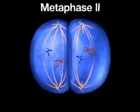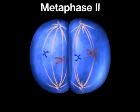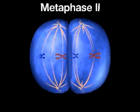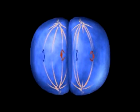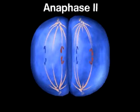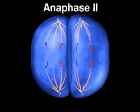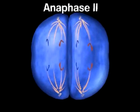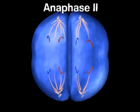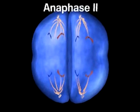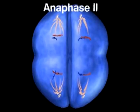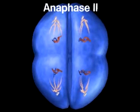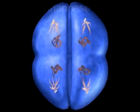During metaphase II, the chromosomes, still made up of sister chromatids, line up at the equator. Anaphase II begins as the centromere of each chromosome splits, allowing the sister chromatids to separate and move to opposite poles.